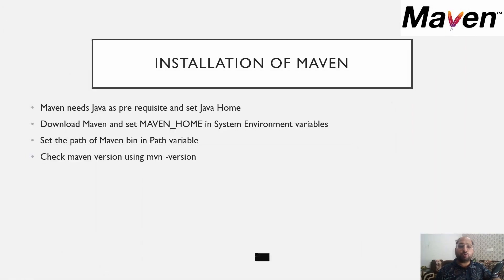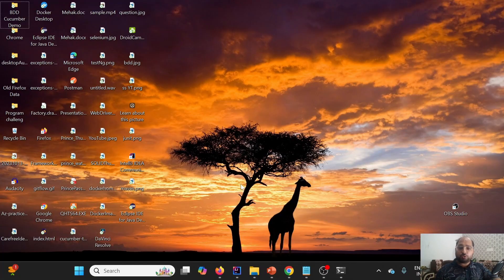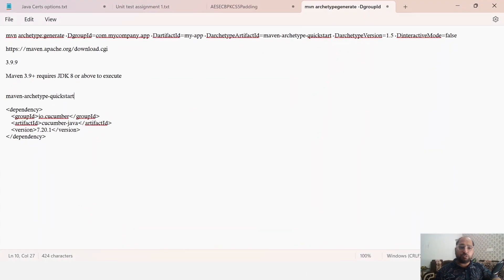To install Maven, we first need to download it. Then we need to set MAVEN_HOME in the system environment variables. Once that is done, we need to add the bin location of Maven to the Path variable in the system environment variables. After that, we will be able to use Maven and confirm the installation using the 'mvn --version' command.